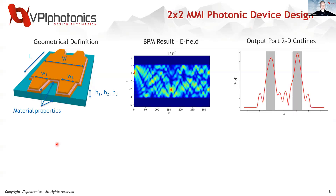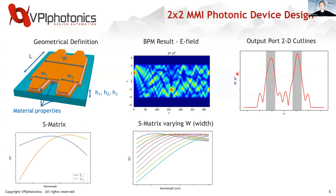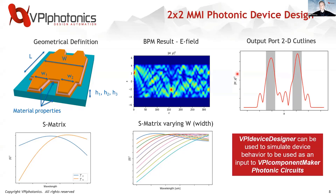To walk through this: we define our MMI — its shape, materials, widths, and lengths — and evaluate the electric field using the beam propagation method. On the right we show a cut line of the two output ports. From that we can calculate an S-matrix and use it as input to the next level of simulation. If we want to study fabrication tolerances, we can vary the width of the MMI, see how the S-matrix changes, and use that in our simulations.